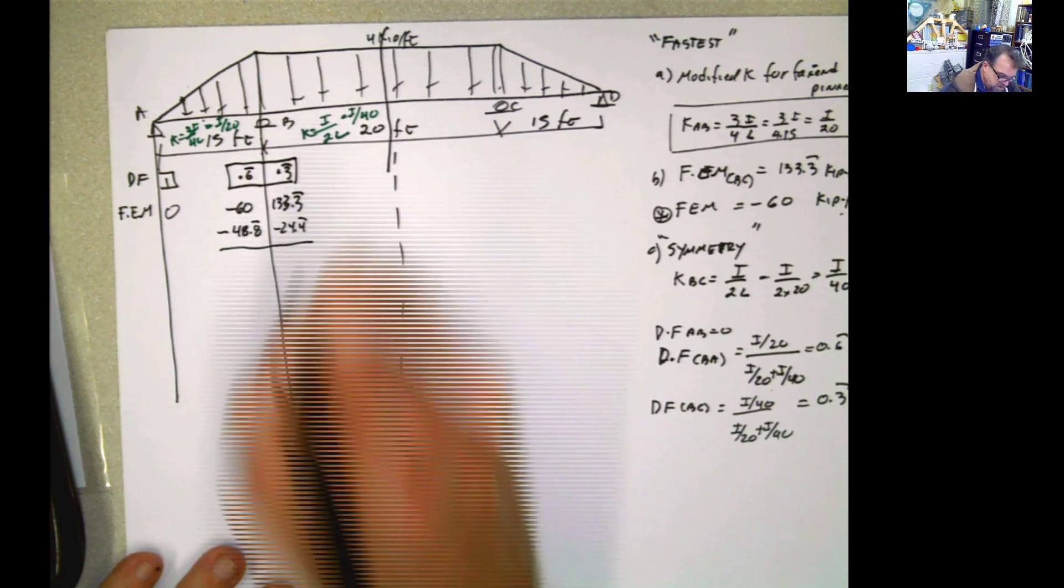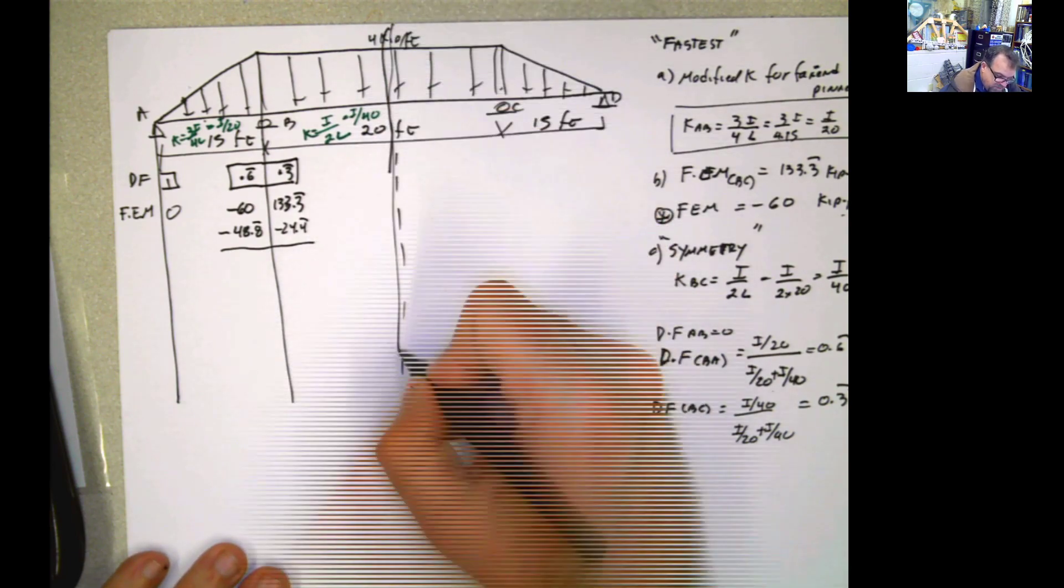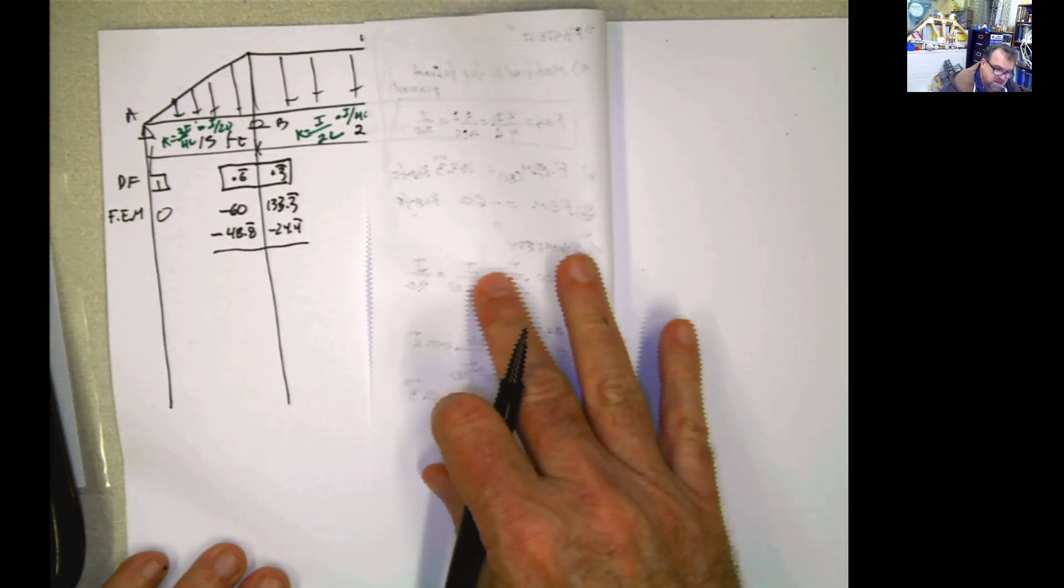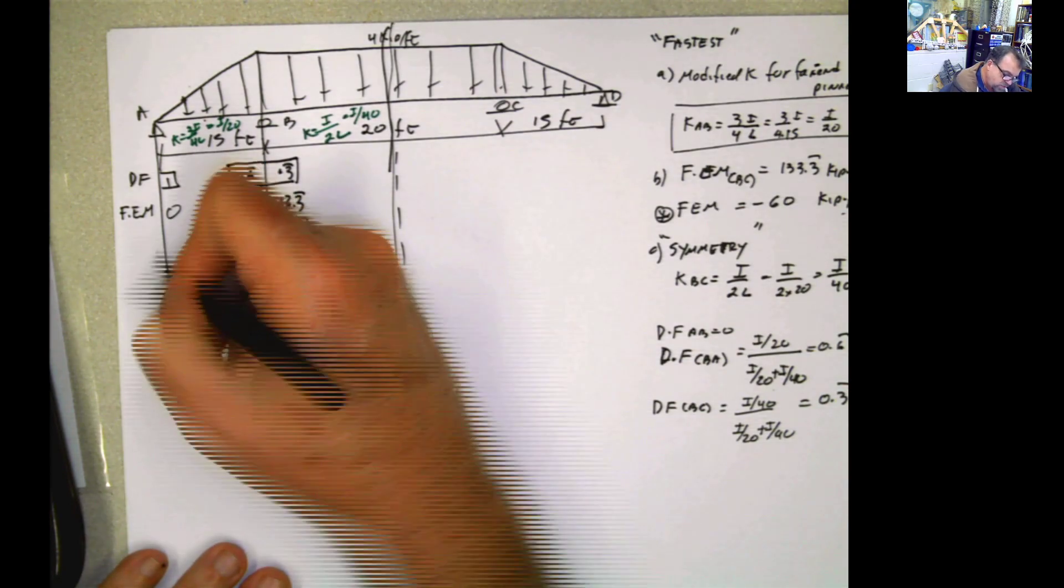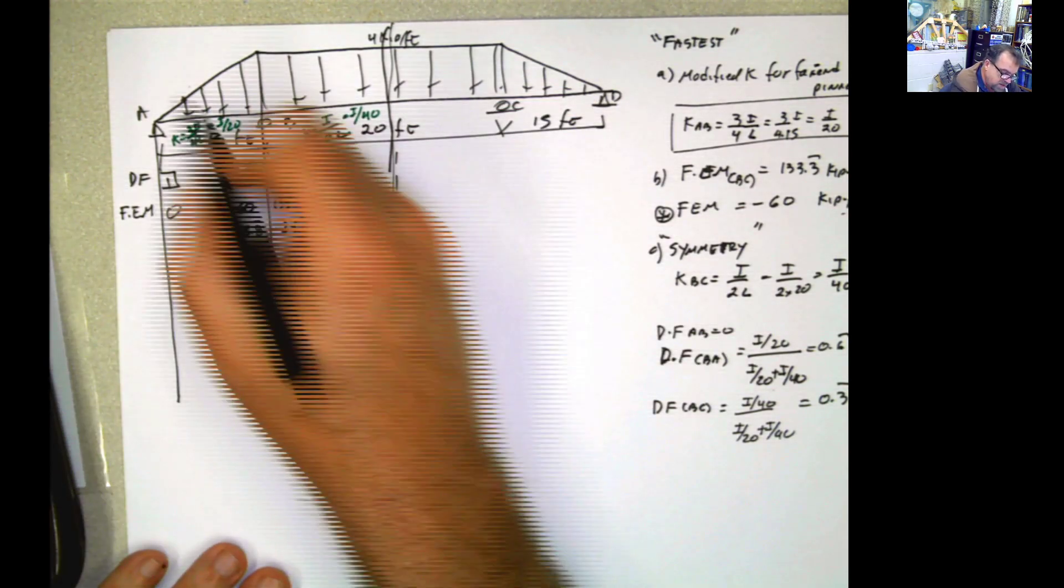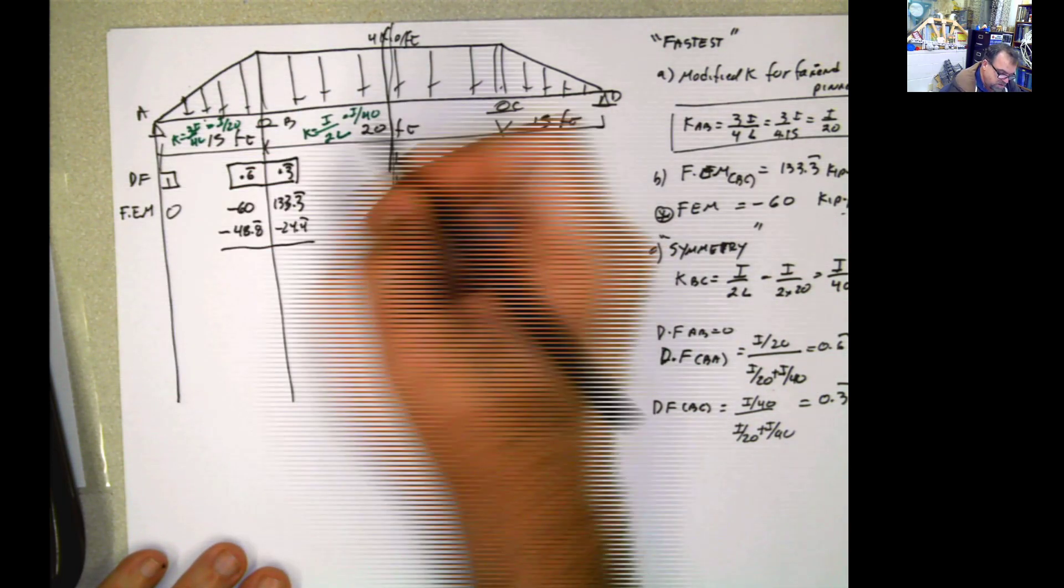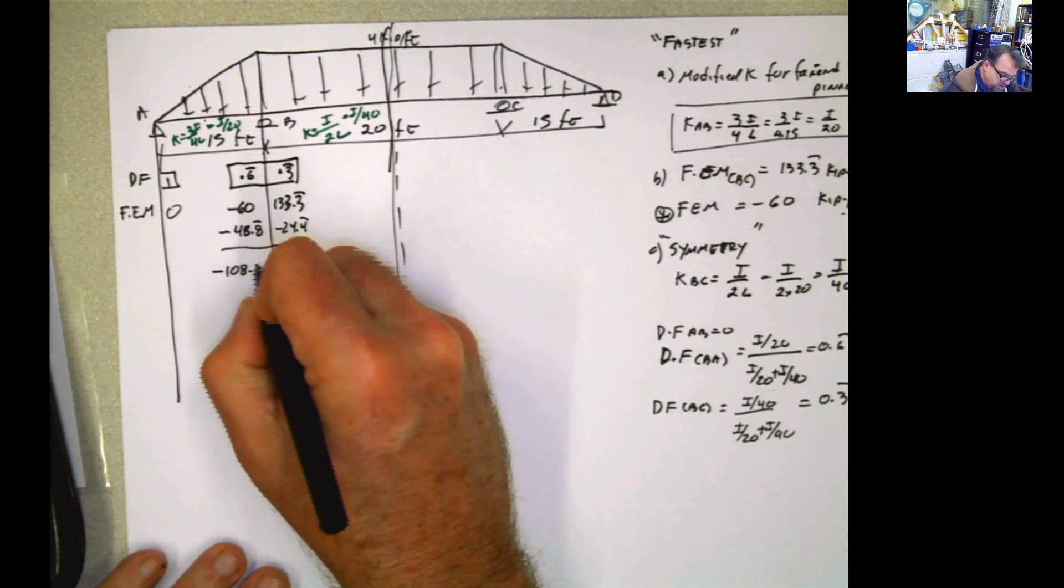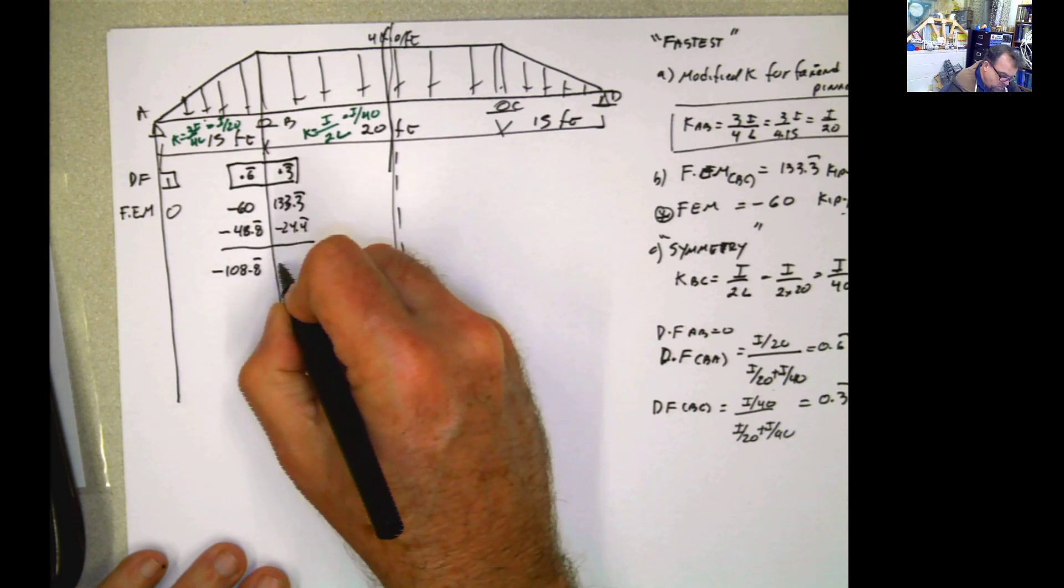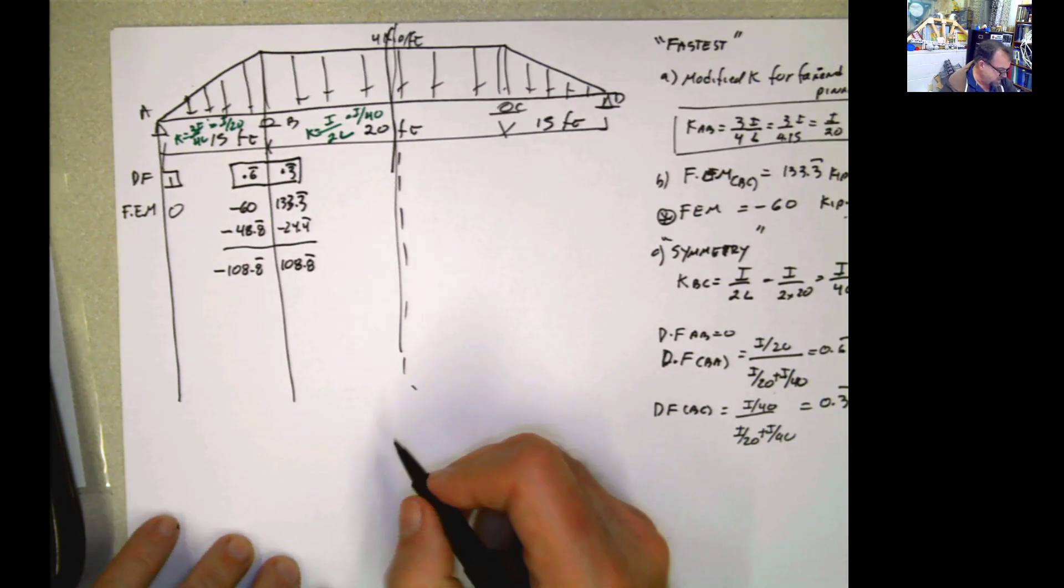This is locked. It's done. This is not transmitted anywhere because there's nothing. This is the half of the beam. This is like if it's like that. There's nothing to be transmitted to. And this is not transmitting anything here because you are using the modified carry-out factors, and the modified inertia k, and the modified fixed end moment. So that means that the only balancing that I have to do is this, negative 108.8 and 108.8. And the problem is done.